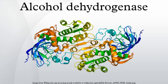Alcohol dehydrogenases are a group of dehydrogenase enzymes that occur in many organisms and facilitate the interconversion between alcohols and aldehydes or ketones with a reduction of nicotinamide adenine dinucleotide. In humans and many other animals, they serve to break down alcohols that otherwise are toxic, and they also participate in generation of useful aldehyde, ketone, or alcohol groups during biosynthesis of various metabolites. In yeast, plants, and many bacteria, some alcohol dehydrogenases catalyze the opposite reaction as part of fermentation to ensure a constant supply of NAD+.